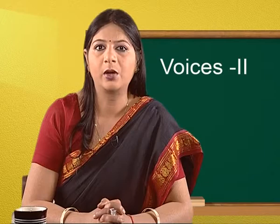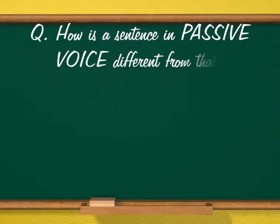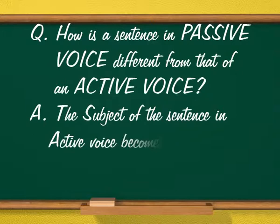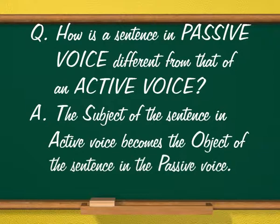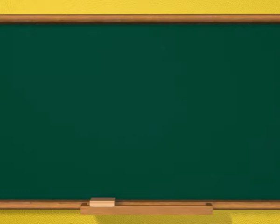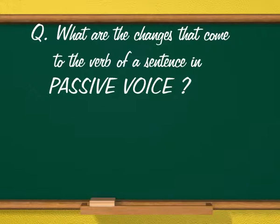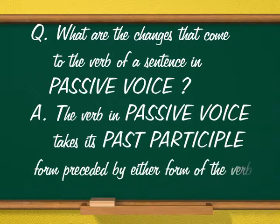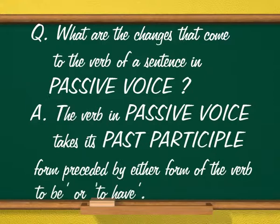We will now try out a few exercises. How is the sentence in passive voice different from that of an active voice? The subject of the sentence in active voice becomes the object of the sentence in the passive voice. What are the changes that come to the verb of a sentence in passive voice? The verb in passive voice takes its past participle form preceded by either form of the verb to be or to have.